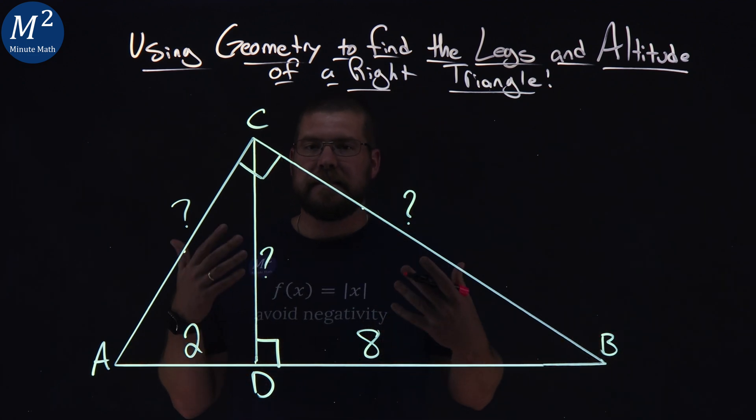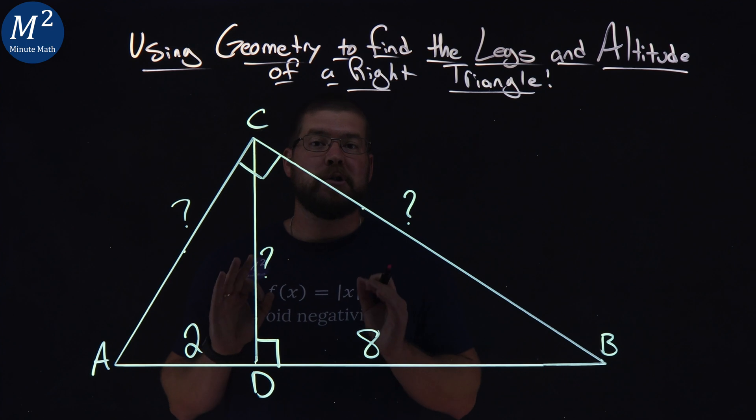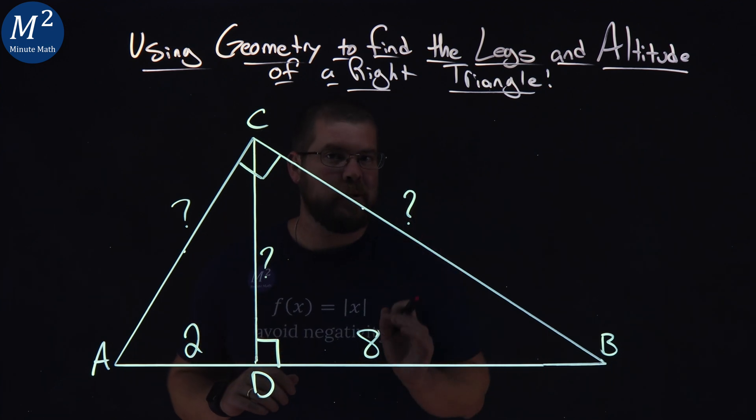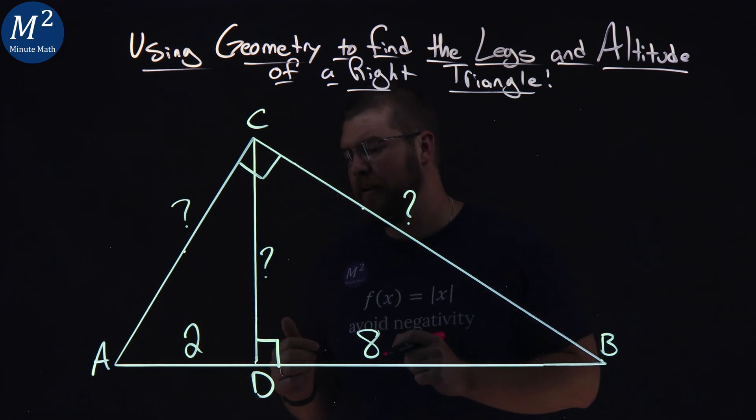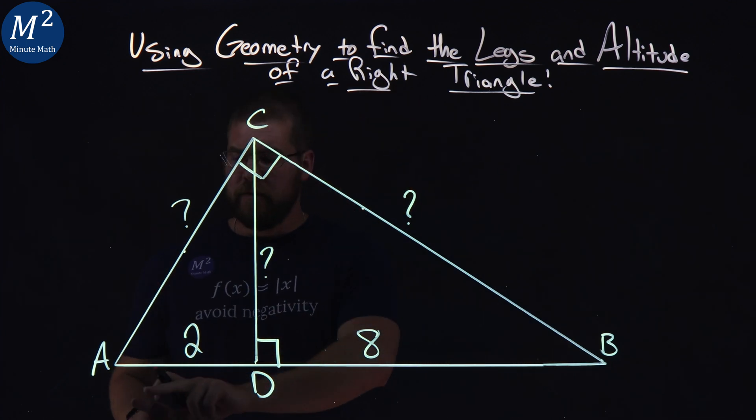But we have a straight line altitude here to this right angle that goes into that hypotenuse. Some things happen. We have a lot of similar triangles. We actually create three similar triangles. It's a beautiful, beautiful little thing in geometry here.